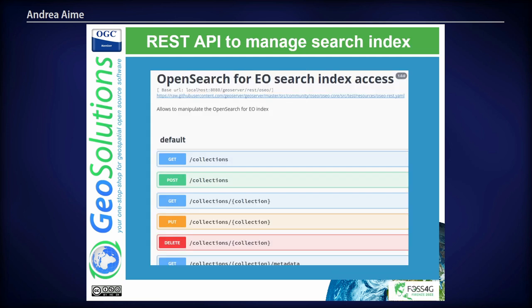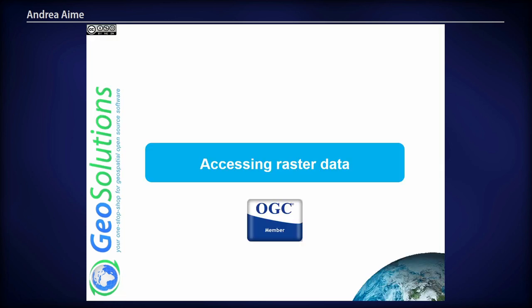We also have a back-end REST API so that you can manage the collections, products, granules, and so on, allowing you to automate the management of the contents of the database. Now, say that I've found what I want and I know which products I want — how do I access that raster data?